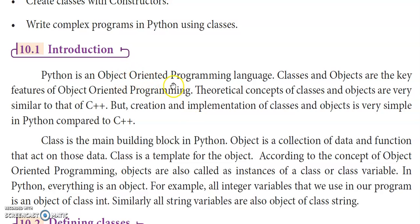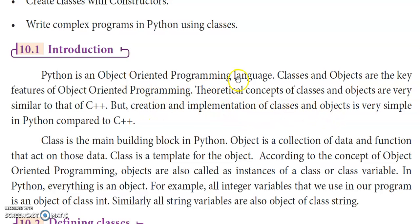Python is an object-oriented programming language. In object-oriented programming, there are many key features. Classes and objects are among them. In C++ in 11th Standard Computer Science, we are already learning theoretical concepts. But in Python, when you compare all languages, the creation and implementation of classes and objects is very simple compared to Java and C++.